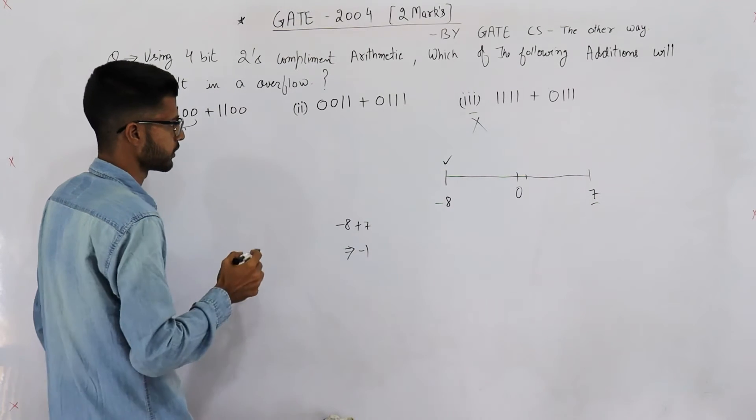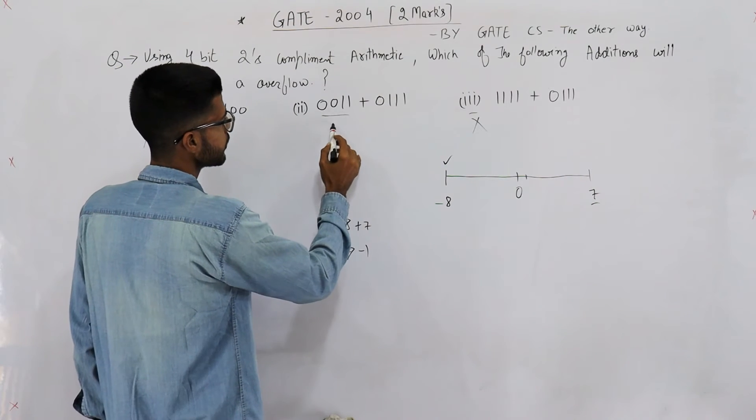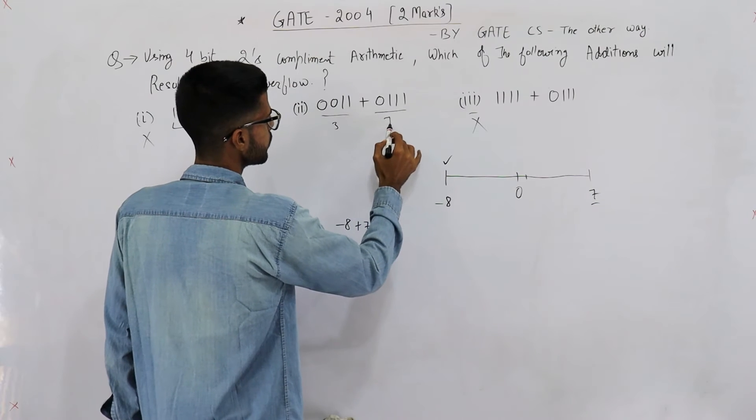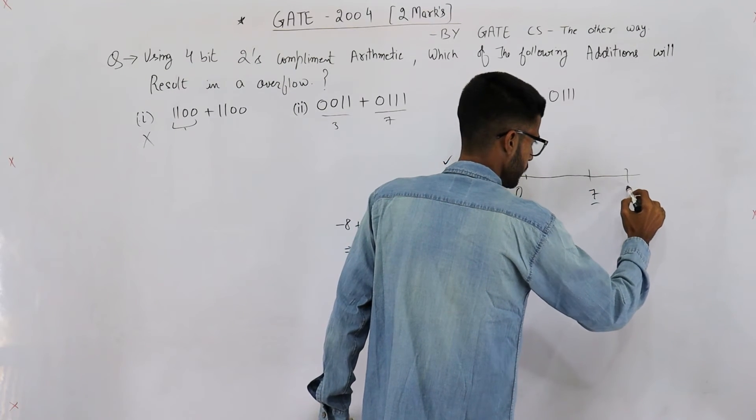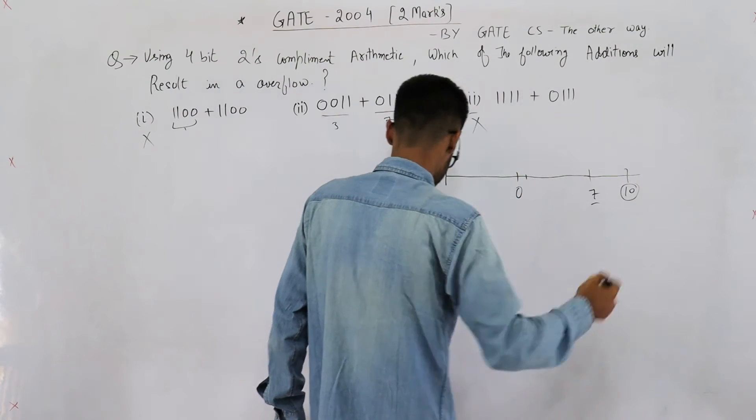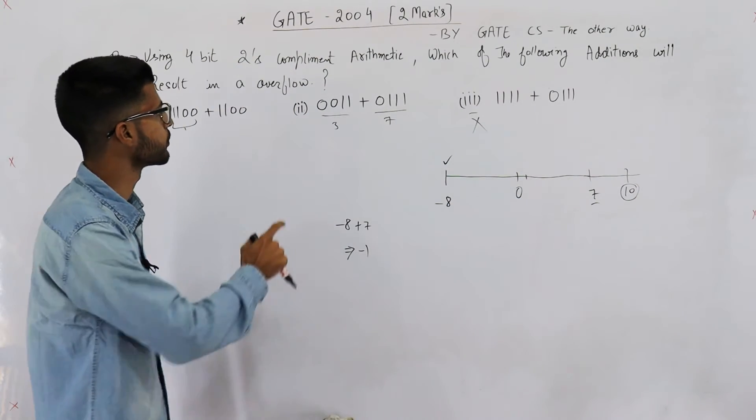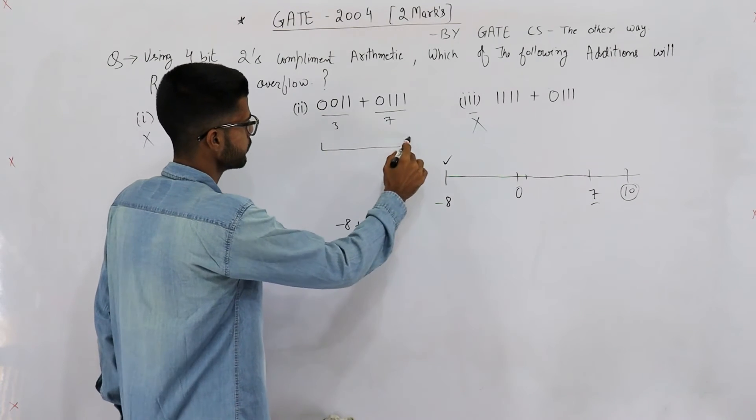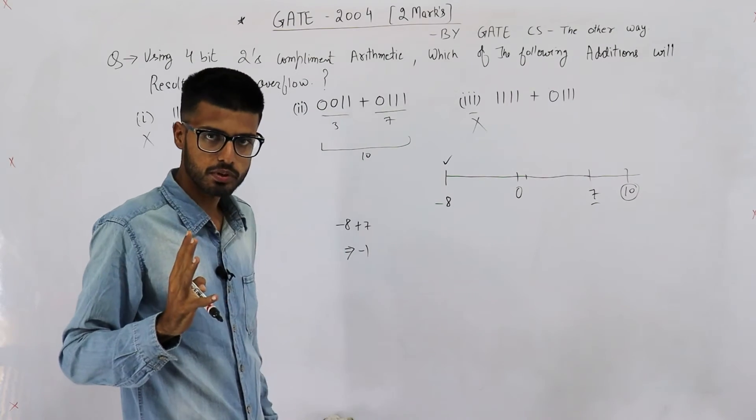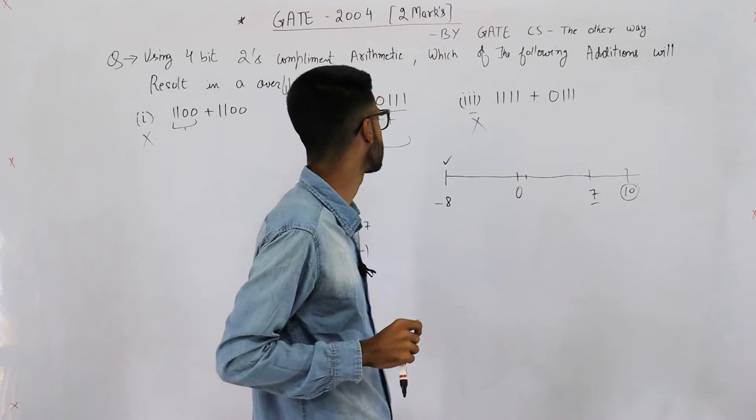Let's see this option. This is 3 and this is 7. 3 + 7 is 10. That means we are going out of the range, so this option will cause an overflow. You cannot save its answer, which is 10, in 4 bits; you need 5 bits to save this answer.